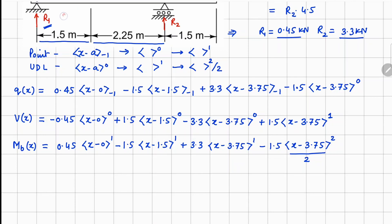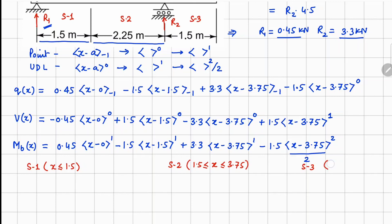The beam is divided into three segments: Segment 1 where x ≤ 1.5, Segment 2 where 1.5 < x ≤ 3.75, and Segment 3 where x > 3.75. In Segment 1 only ⟨x − 0⟩ is positive, so only the first terms are active. In Segment 2, both ⟨x − 0⟩ and ⟨x − 1.5⟩ terms are active. In Segment 3, all functions contribute.